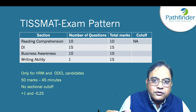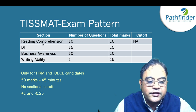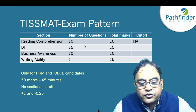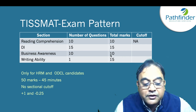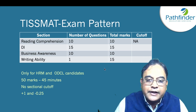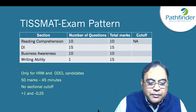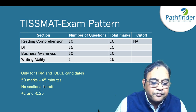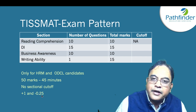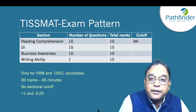Stage 2 for HR and ODCL students is the TISMAT exam. Its pattern has 4 sections: Reading Comprehension (10 questions, 10 marks), Data Interpretation (15 questions, 15 marks), Business Awareness (10 questions, 10 marks), and Writing Ability Test (a prompt on which you write, 15 marks). Total is 50 marks, 45 minutes duration, no sectional cutoffs. There is negative marking: +1 for each correct answer and -0.25 for every wrong answer.